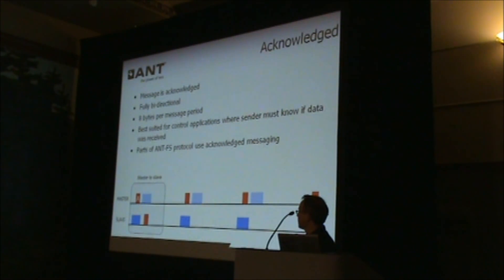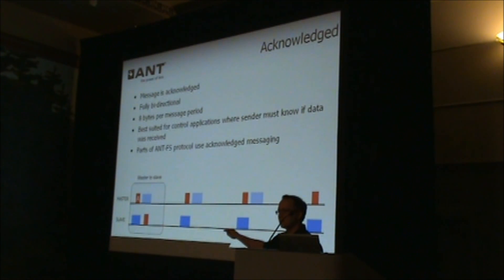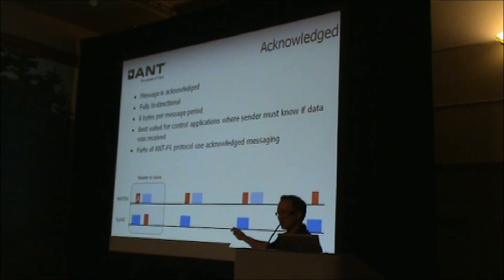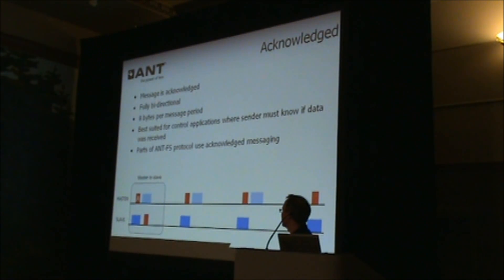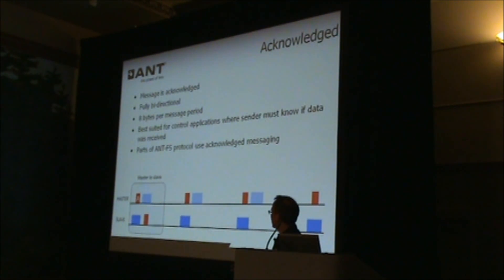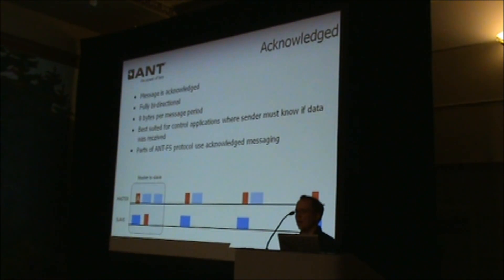As soon as the slave receives that message, it's going to generate its own acknowledged packet. That packet has no useful data in it, outside of just saying it received the message. But it's still the same width as a regular message packet, so it keeps the radio on for the same amount of time as any other transaction. The master is then going to receive that information in its Rx window, and then it's going to open up another Rx window to account for coexistence.